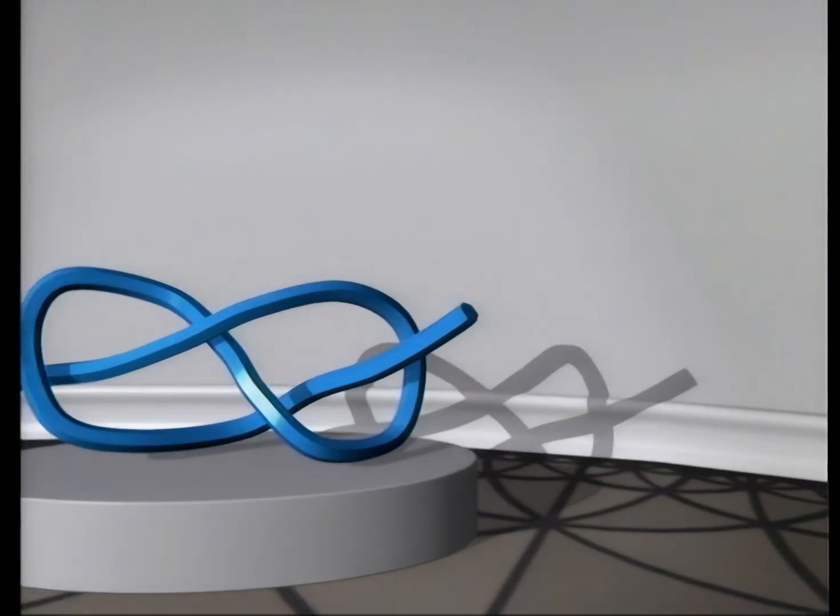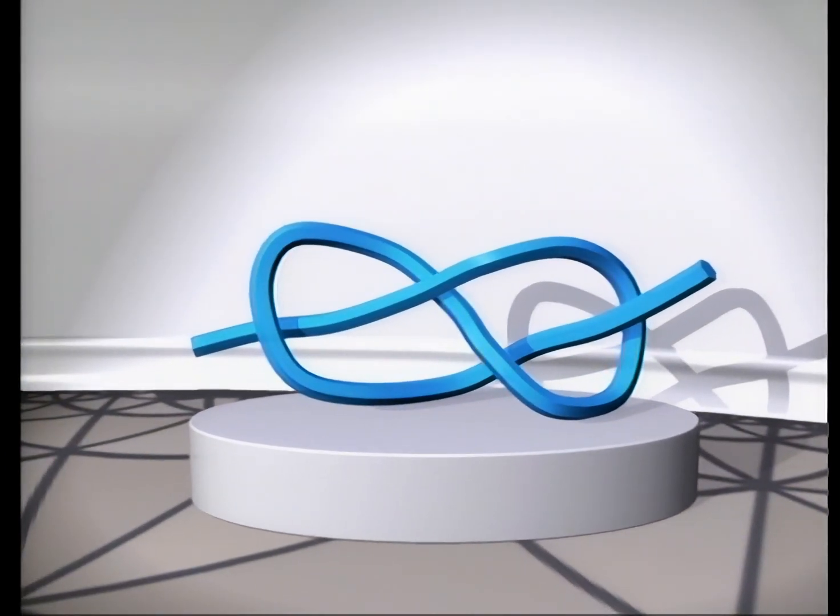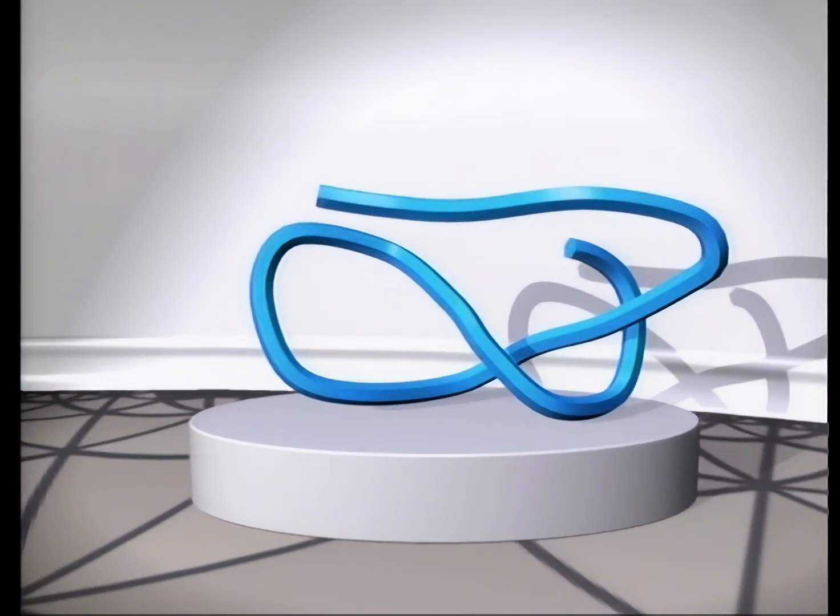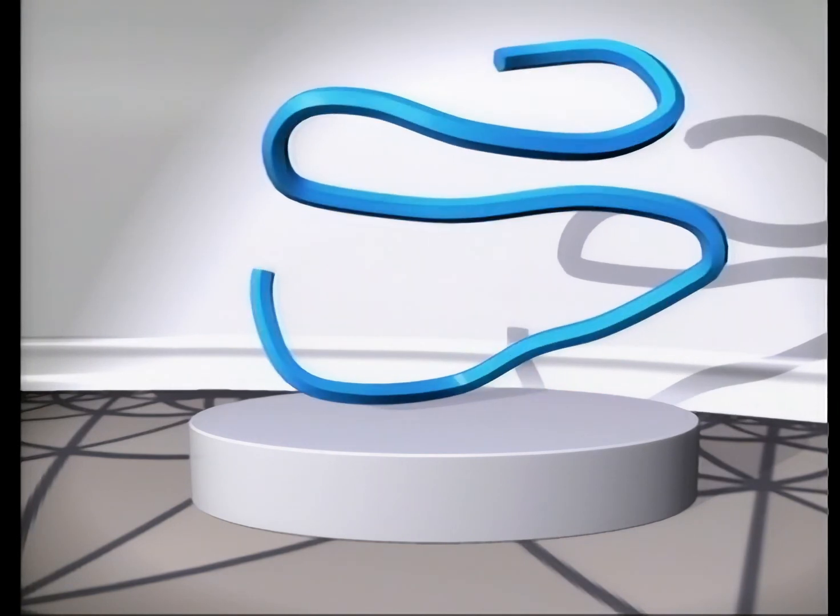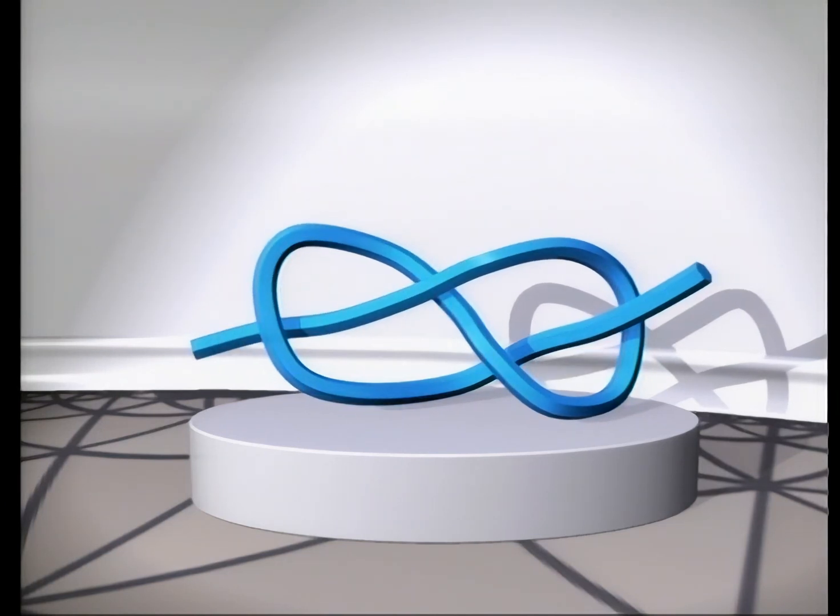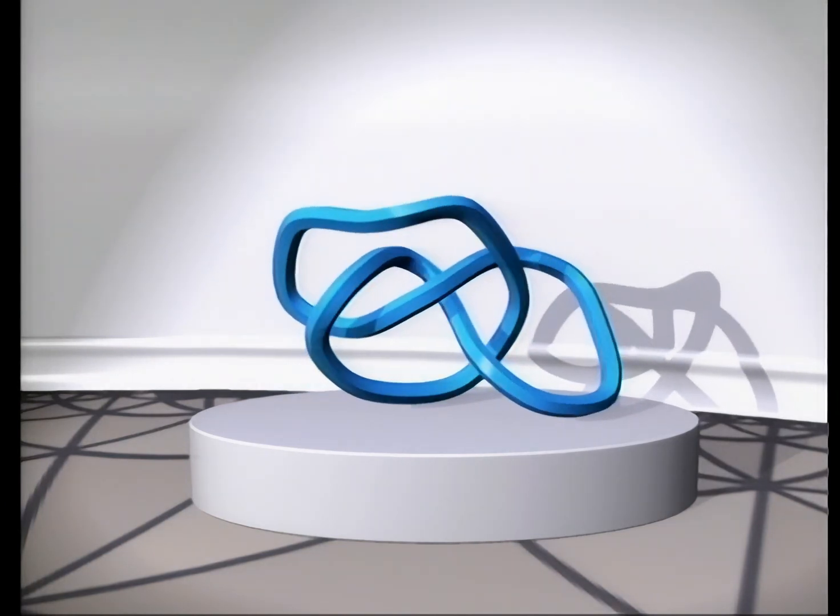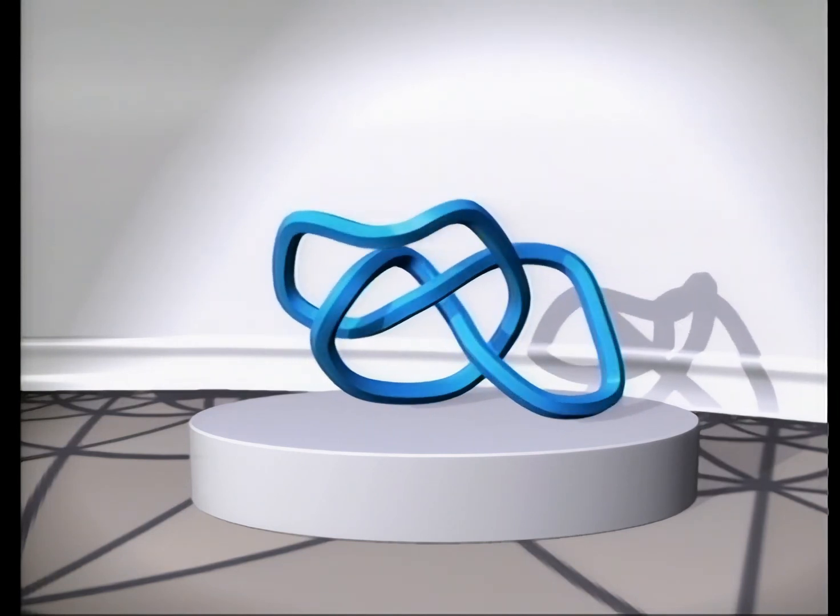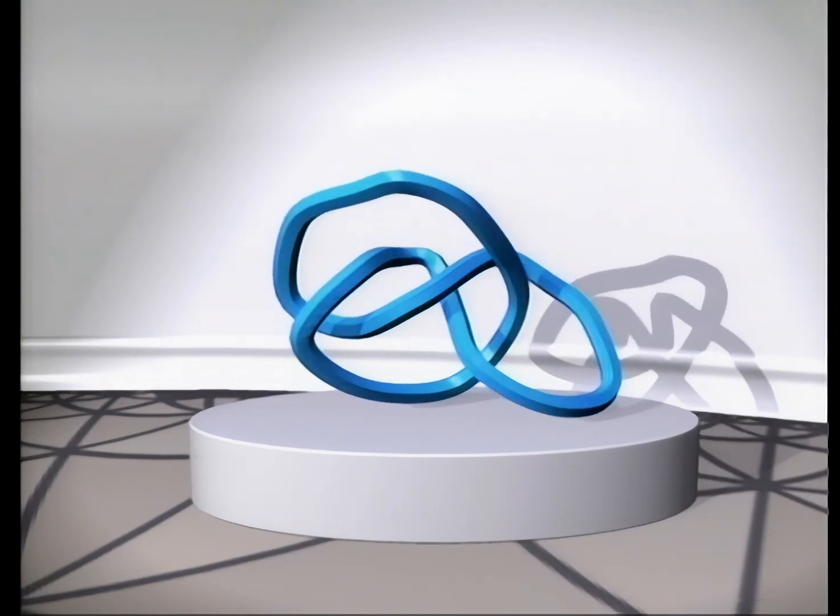Let's begin. This figure eight knot can be untied since its ends are free. From a mathematician's point of view, this knot is no knot at all. But if we join the ends to form a loop, we can no longer undo the knot without cutting it. Now that's a knot.